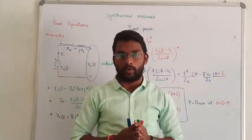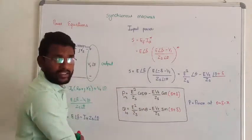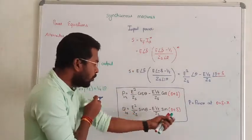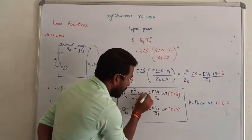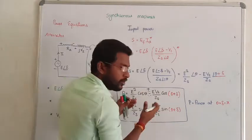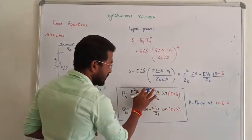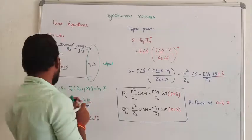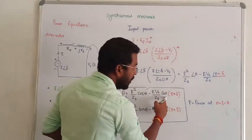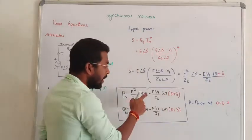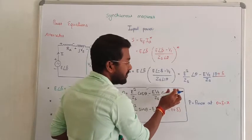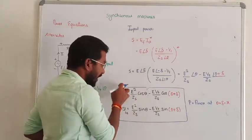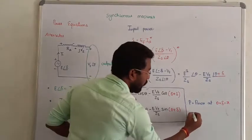Next, the question is: what is the condition for maximum power delivery from the alternator? Observing the real power equation, there are two terms. The general formula gives the real power internally developed. The condition for maximum power is when cosine of the angle equals minus one, i.e., when theta plus delta equals pi. Substituting cos(pi) equals minus one, minus into minus becomes plus, allowing us to obtain the maximum power.